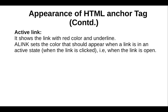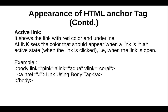A link sets the color that should appear when a link is in an active state — that is, when the link is clicked. For example, we can add all the appearance attributes of the anchor tag — link, alink, and vlink — in the body tag.